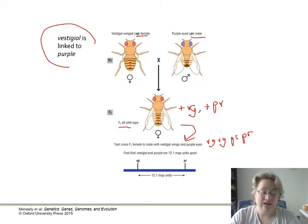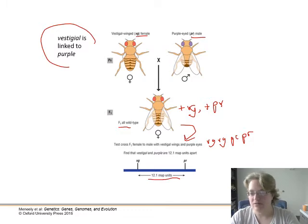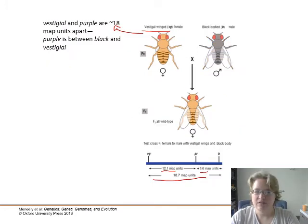So that one is VG VG, PR PR. You could do out a Punnett square and see what the outcome should be if everything's segregated normally. It will not. These two are linked. And you'll find that about 12% of the offspring have the recombinant, the crossover gamete types. And so therefore, they are 12 map units apart.